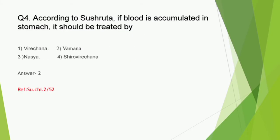Question number 4: According to Sushruta, if blood is accumulated in the stomach, it should be treated by Virechana, Vamana, Nasya, or Shiro Virechana. The correct answer is option 2, Vamana. This is a direct question from Sushruta Chikitsa, Sadyovrana Chikitsita Adhyaya, in the context of Raktapurna Koshtha Chikitsa. The shloka says if blood is accumulated in Amashaya, Vamana is the treatment of choice, and if it is accumulated in Pakvashaya, either Virechana or Nisnehastambana must be done.